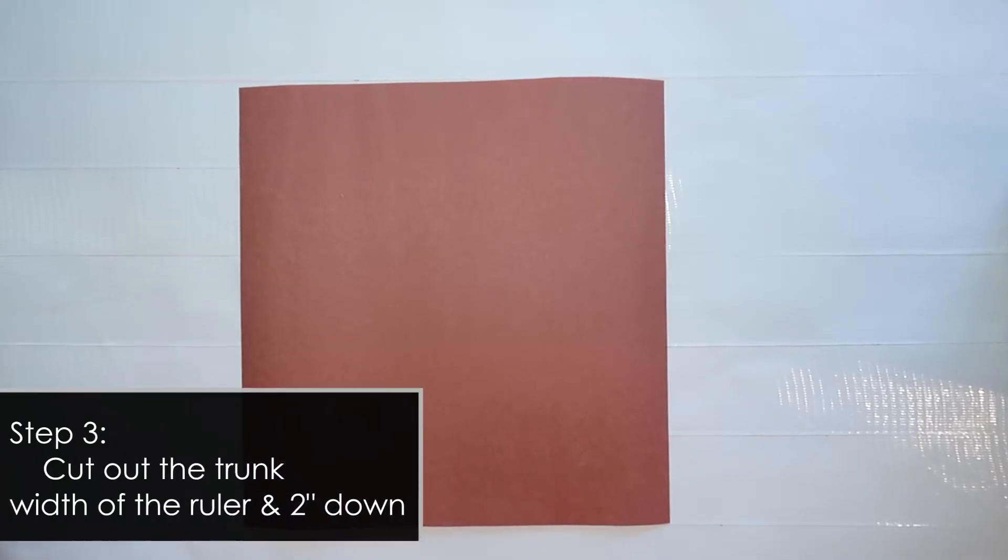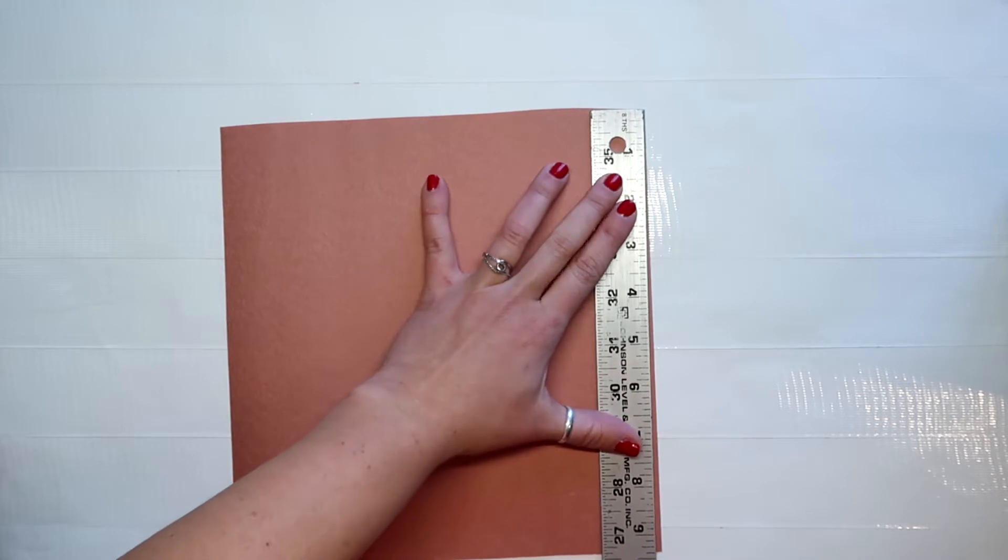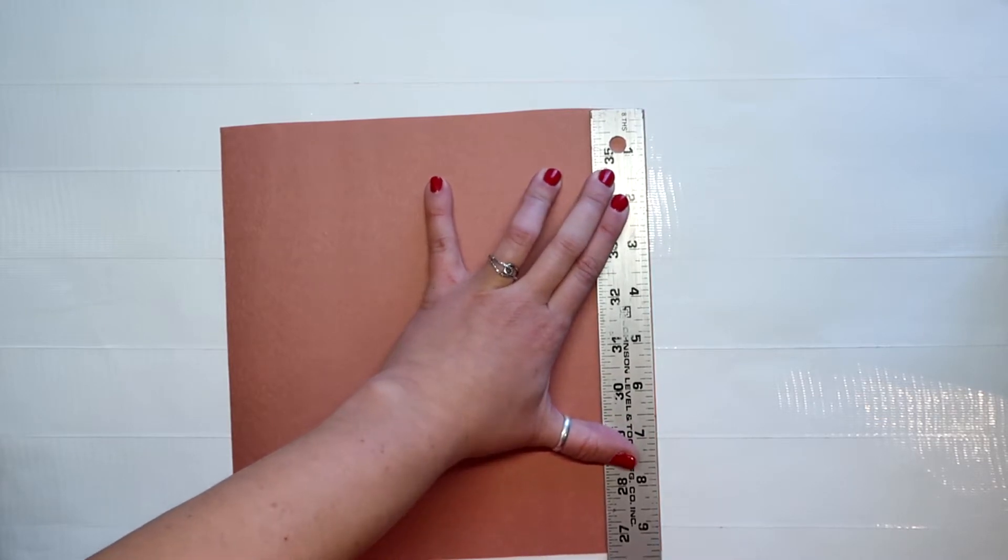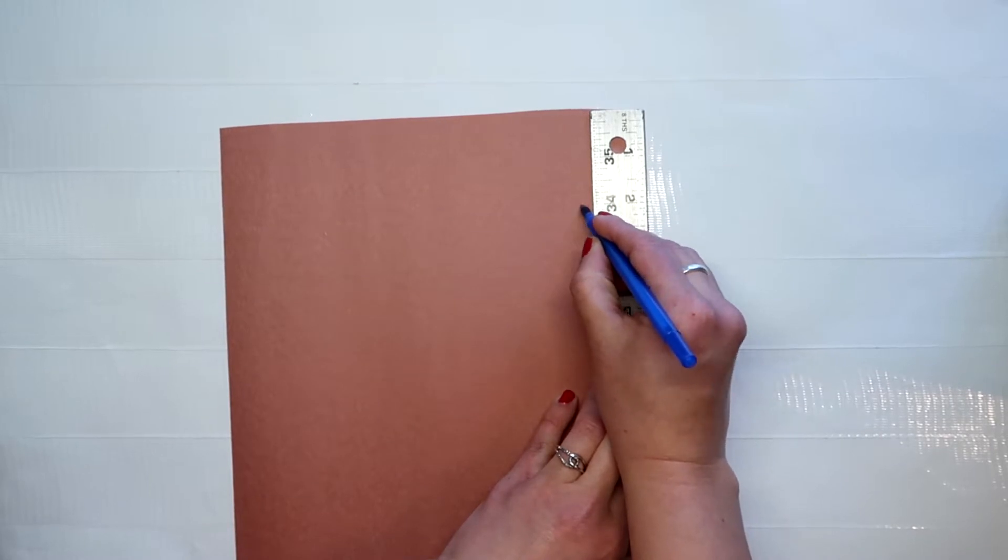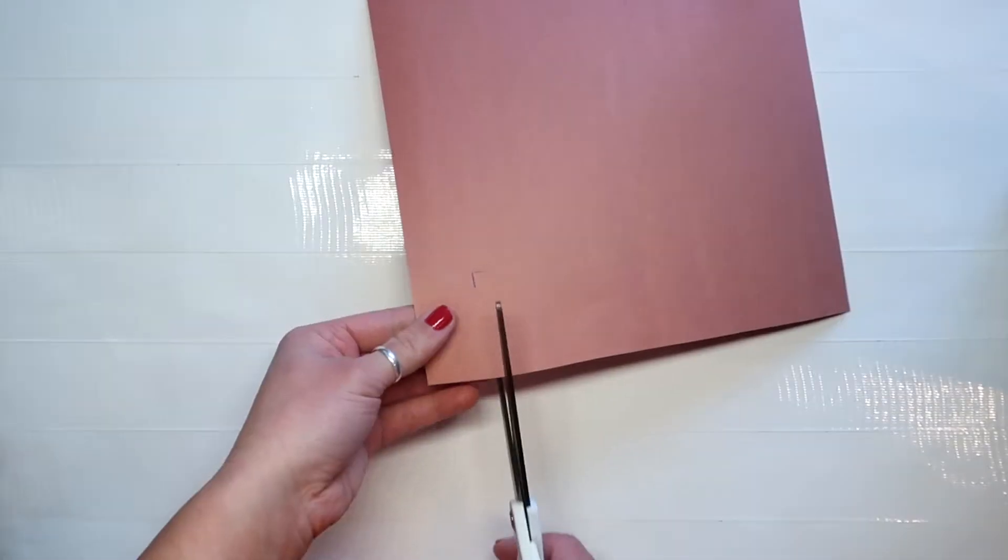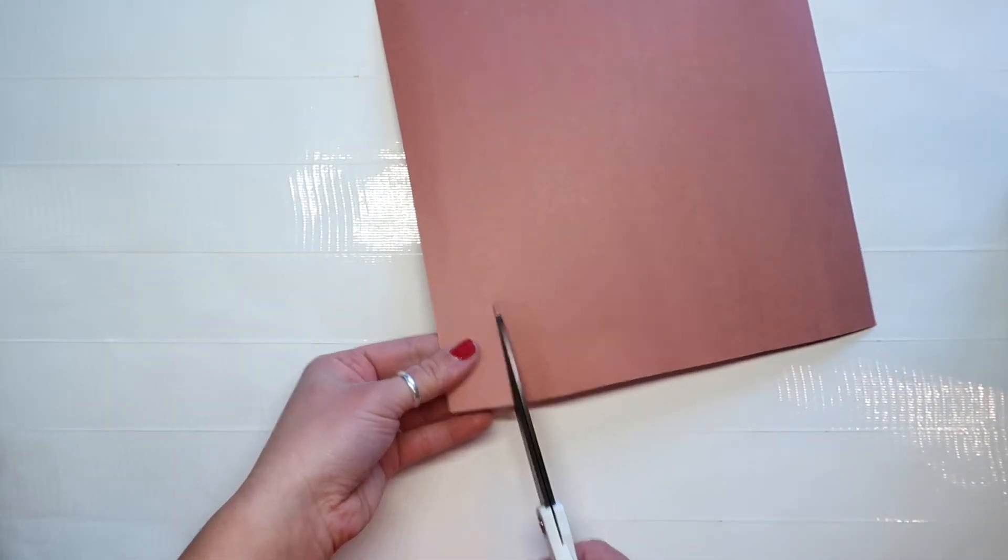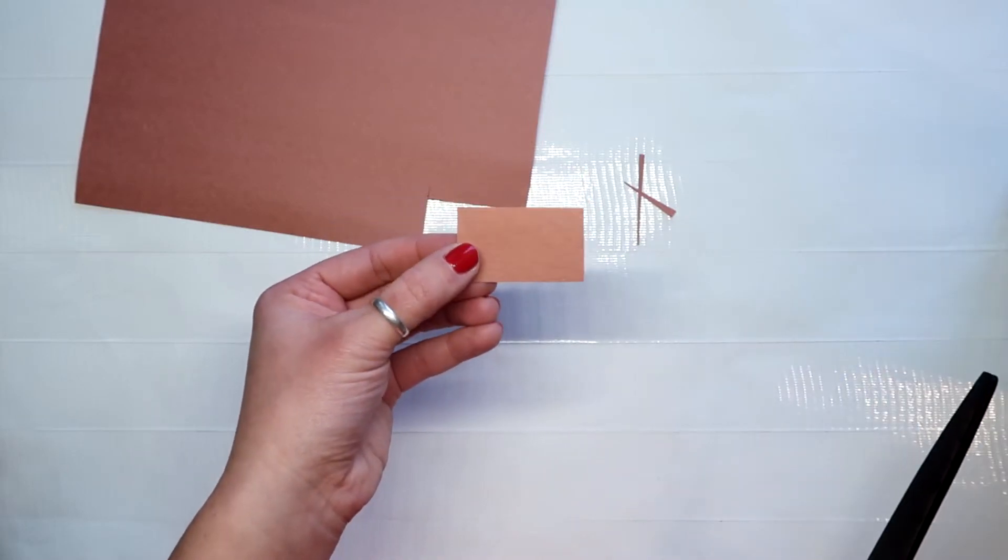Now you want to also cut out the stem of your tree. So it'll be the width of your ruler and then you're going to measure two inches and just make a mark there. So now I'm going to cut along this line and we'll use that later also so you can set that aside.